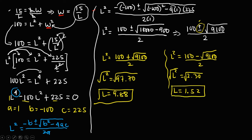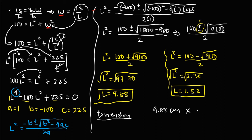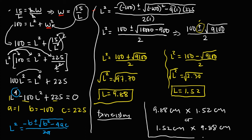Therefore, the dimensions of the rectangle inscribed in the circle are 9.88 centimeters by 1.52 centimeters. This is the final answer.